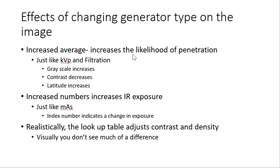Generator type, KVP, and filtration each affect the spectrum differently. Increasing KVP raises the average and increases both penetration and output. Increasing filtration raises the average but reduces output. With voltage waveform changes, output increases and average increases without changing the peak — KVP is the only thing affecting the peak — and filtration is the only thing affecting minimum energy. Voltage waveform affects neither of those, but does increase output and average energy. All contrast and density effects still apply in the same direction.